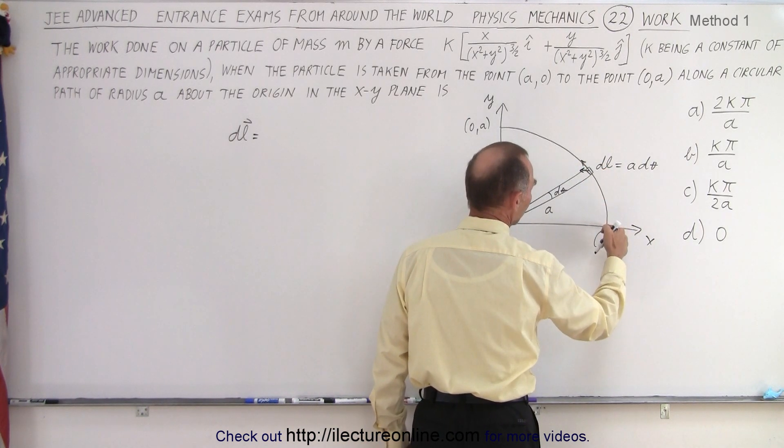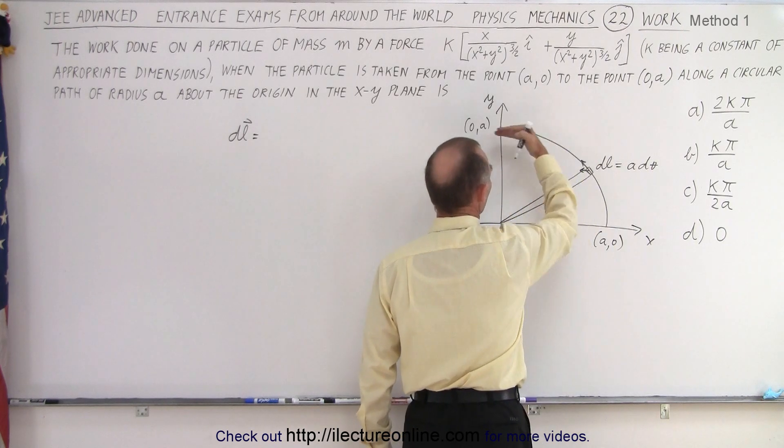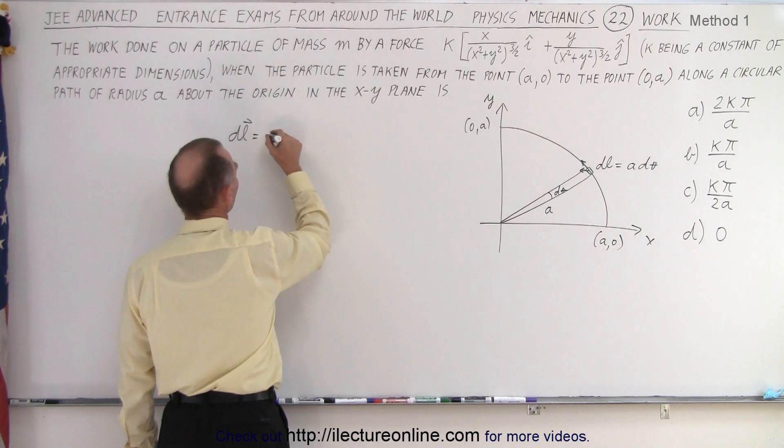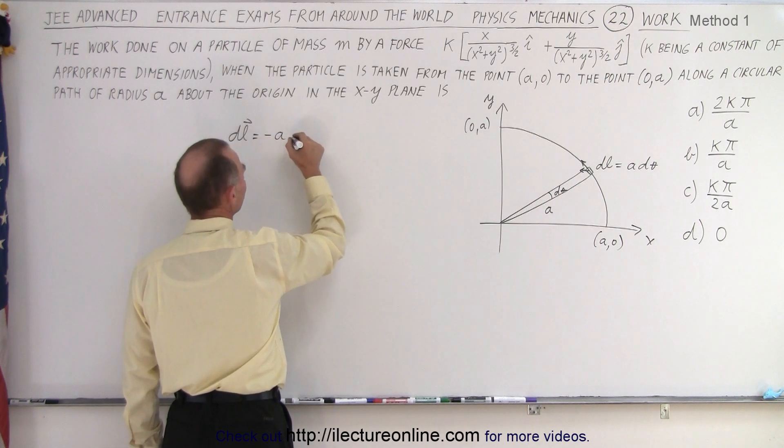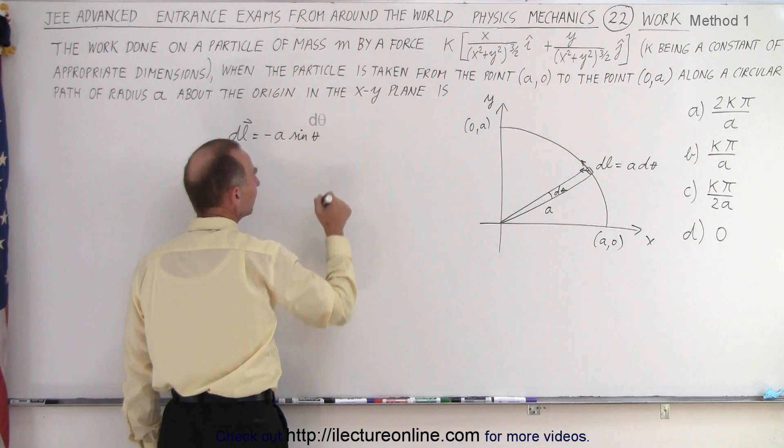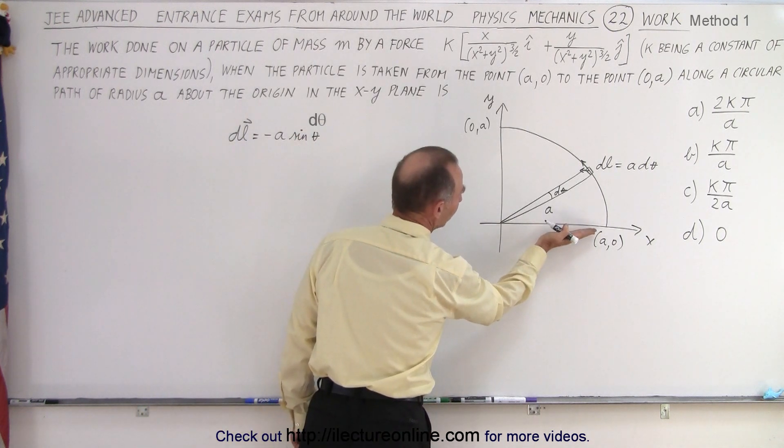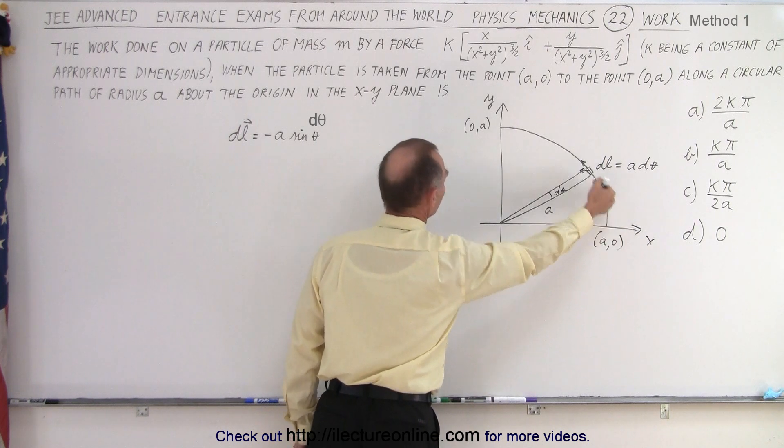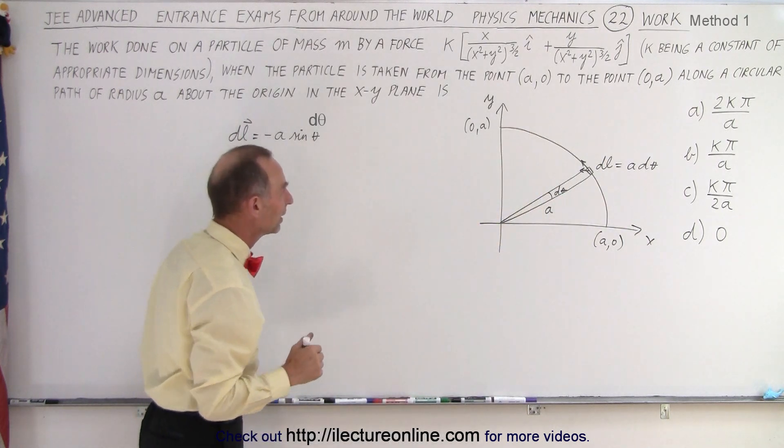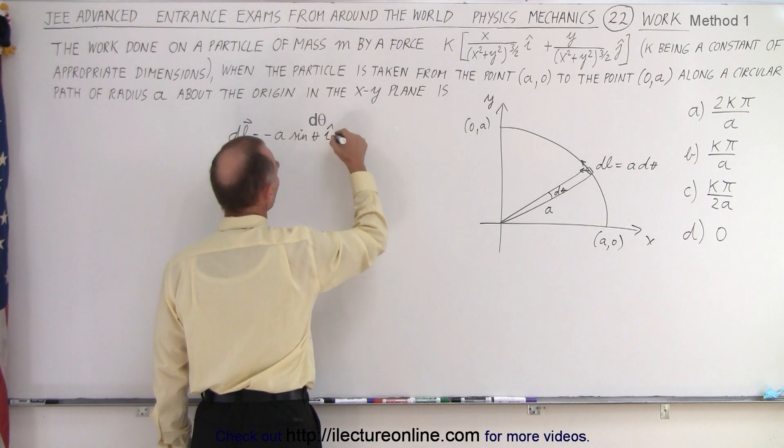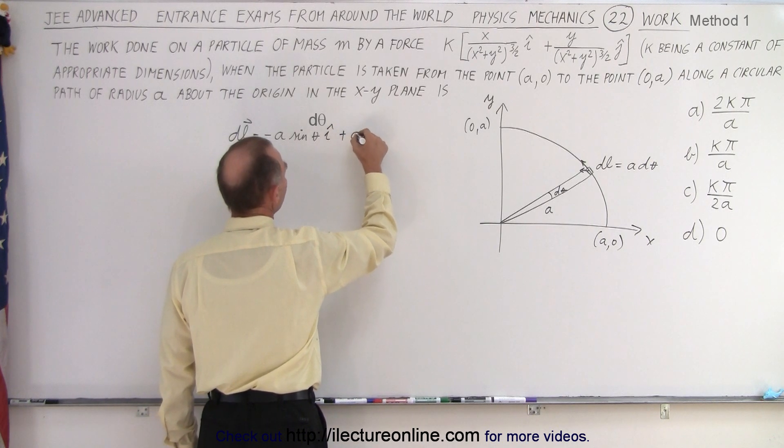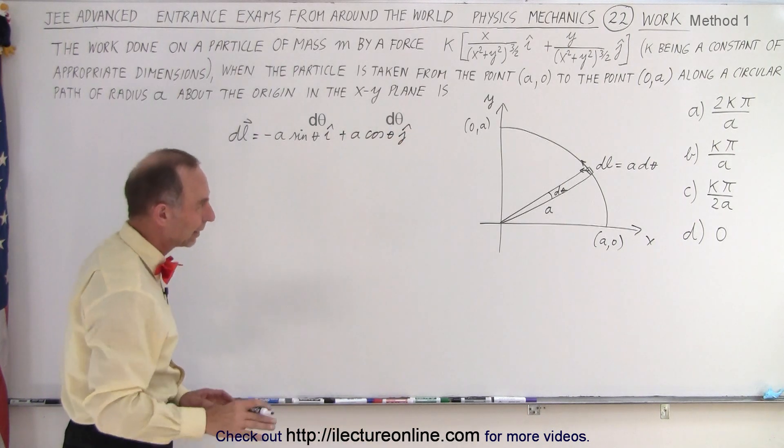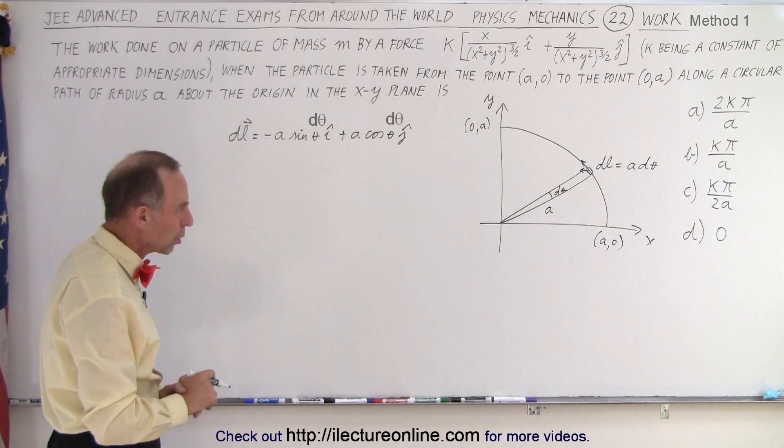if we take this direction right here, notice that it's 0 over here, maximum value there, pointing in the negative direction. So DL can be expressed as minus A times the sine of theta, because when theta is 0, the sine of 0 is 0. That makes sense. There's no component in that direction. Here's the maximum component. So minus A sine theta in the I direction and then plus A cosine theta